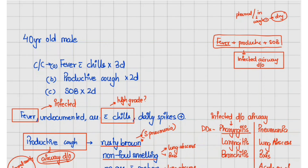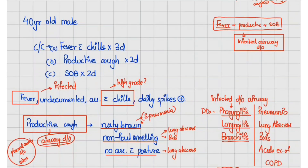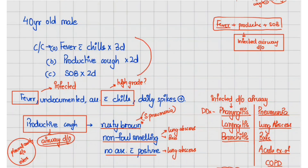The differentials for an infected airway disorder can be pharyngitis, laryngitis, bronchitis, or involvement of the alveoli — that is, pneumonia, lung abscess, bronchiectasis, or acute exacerbation of COPD. Our history-taking should be aimed at localizing one of these causes.